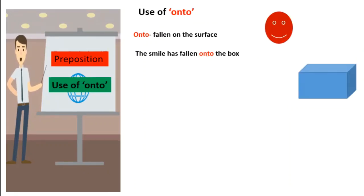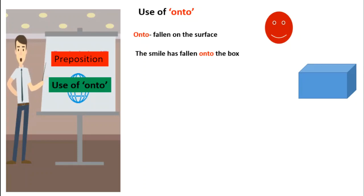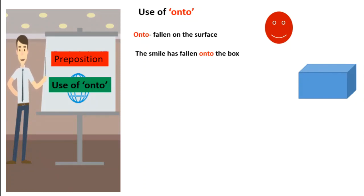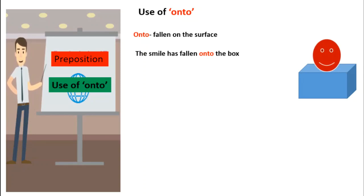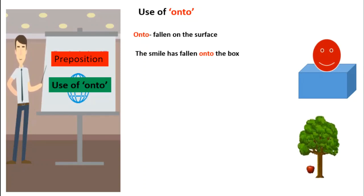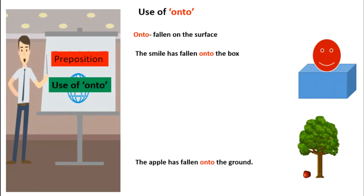The next point we are going to discuss is the use of 'onto'. 'Onto' is a little bit different from 'into'. When something gets inside from outside, we use 'into'. But in the case of 'onto', the object falls onto the surface of something. Like, the smiley has fallen onto the box, or the apple has fallen onto the ground.